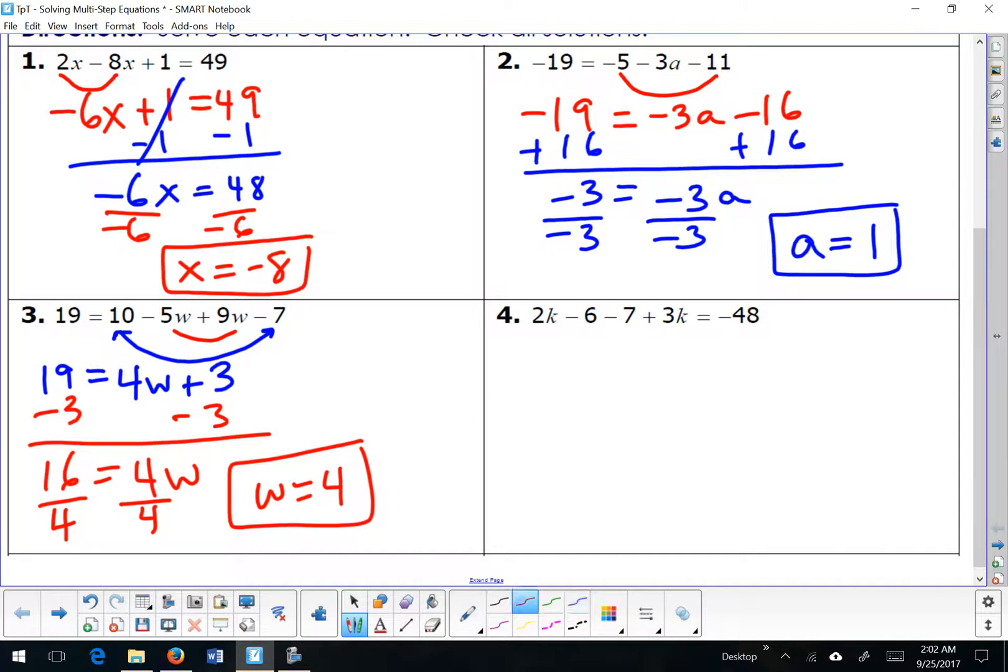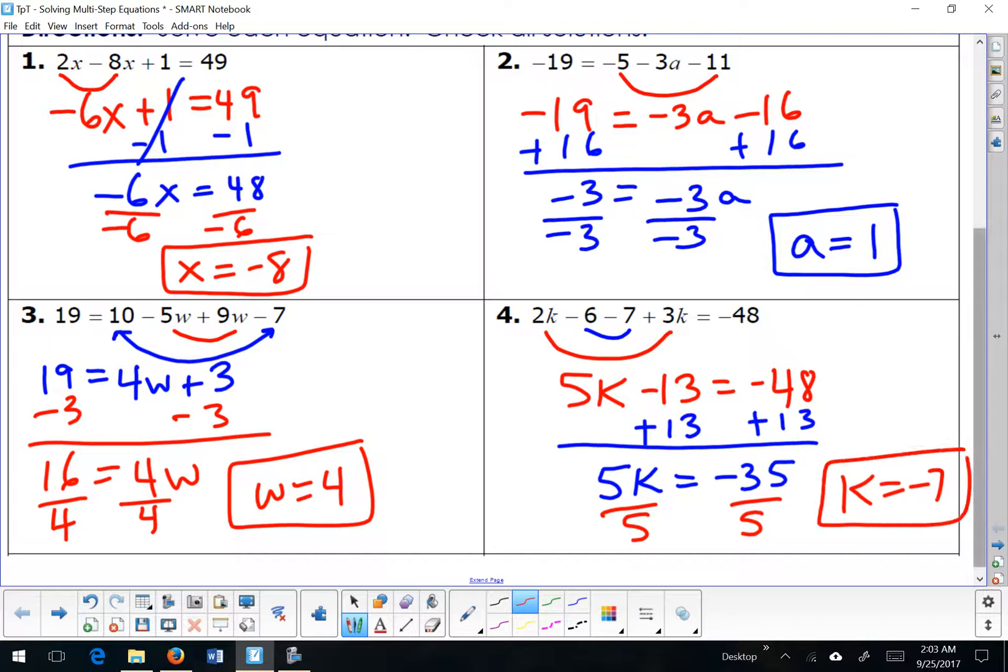Let's try question number 4. This one, just like question number 2, has different terms that are alike. So I have variable terms and constant terms. Again, it doesn't matter which one you combine first. But I'm going to combine my constant terms first. 5x minus 13, and rewrite the rest as is. So clear my constant, negative 35, and my final solution is negative 7.